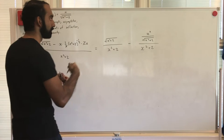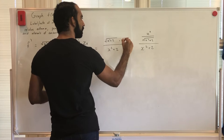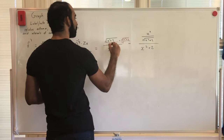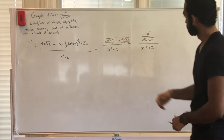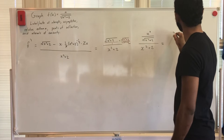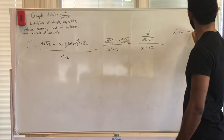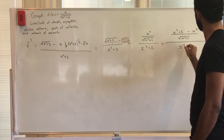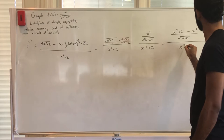To combine the numerators, both need the same denominator. Multiplying through, the top becomes x² + 2 minus x², which is just 2, all over √(x² + 2) times (x² + 2).